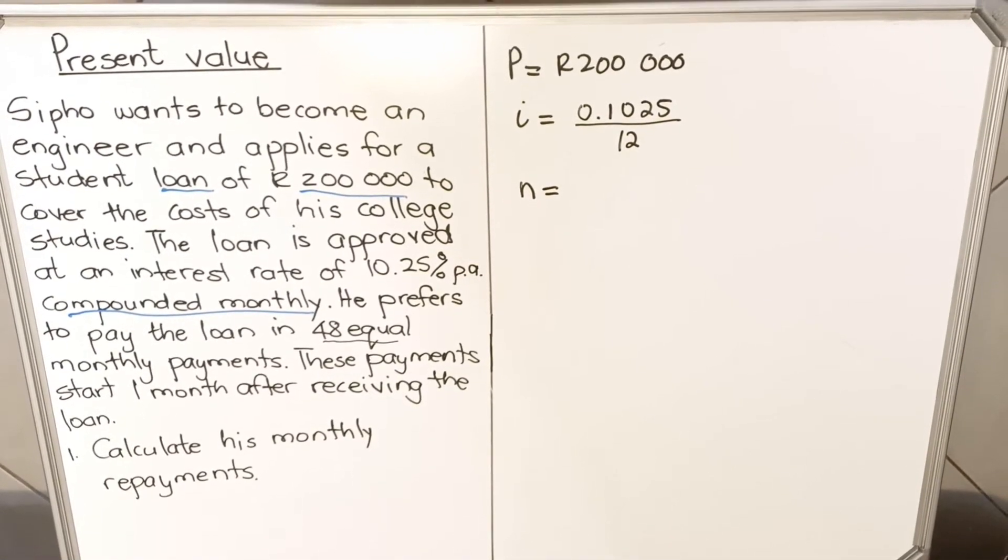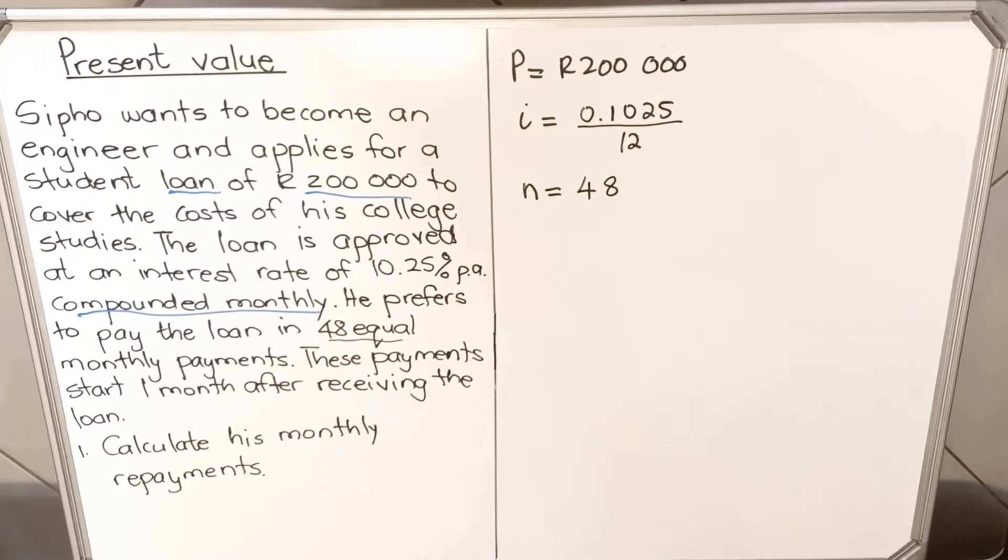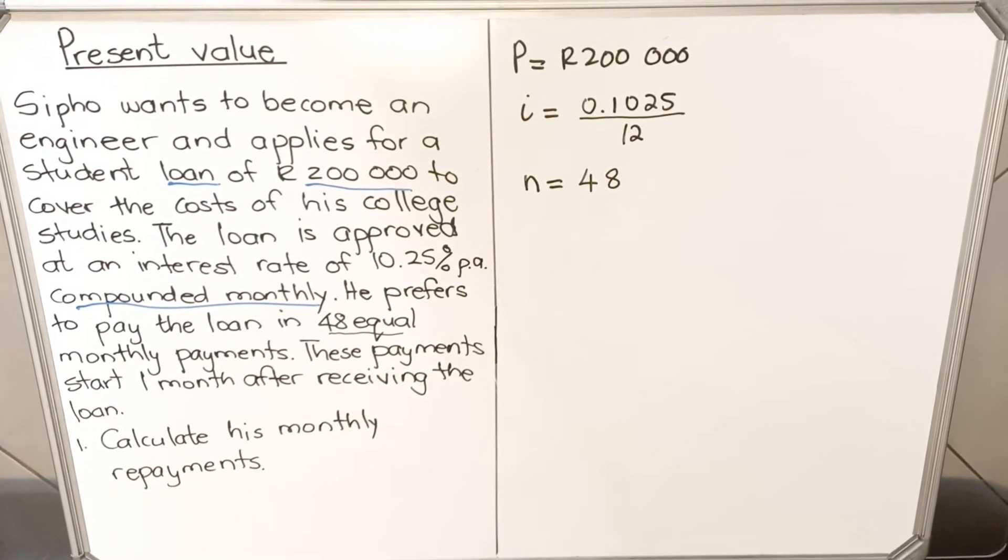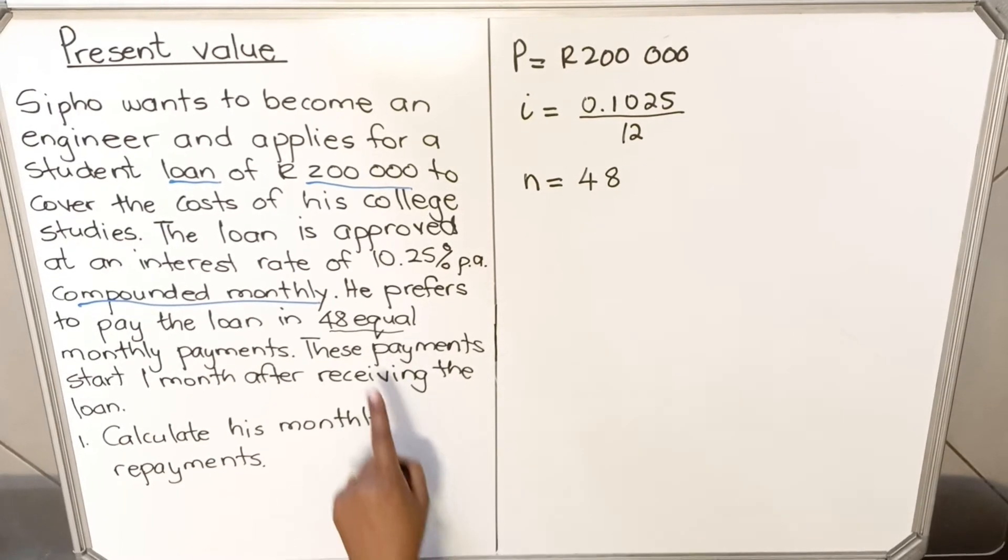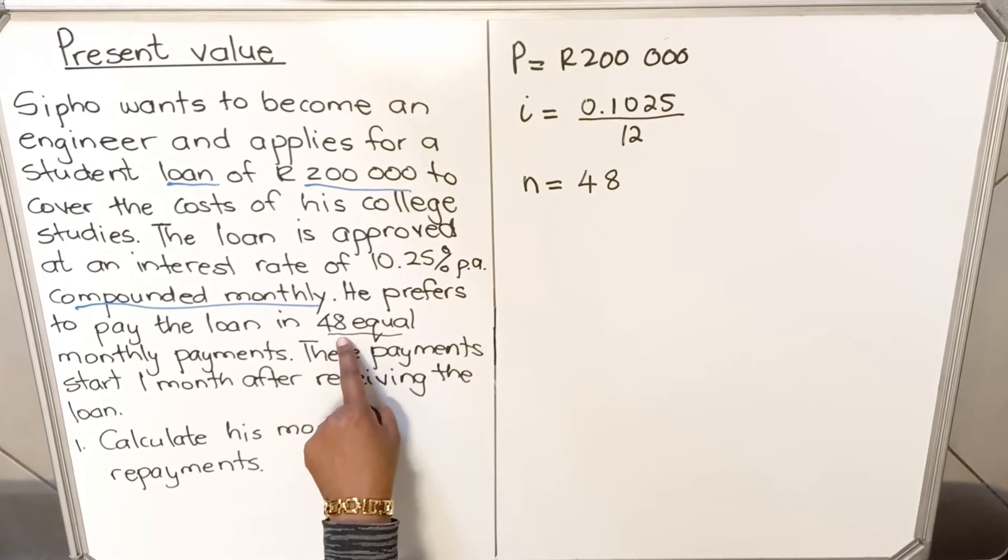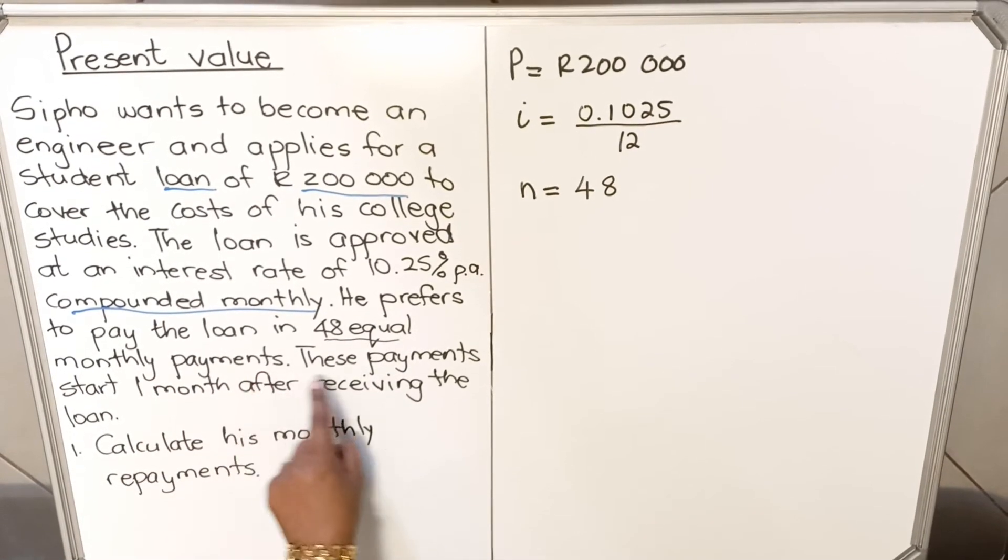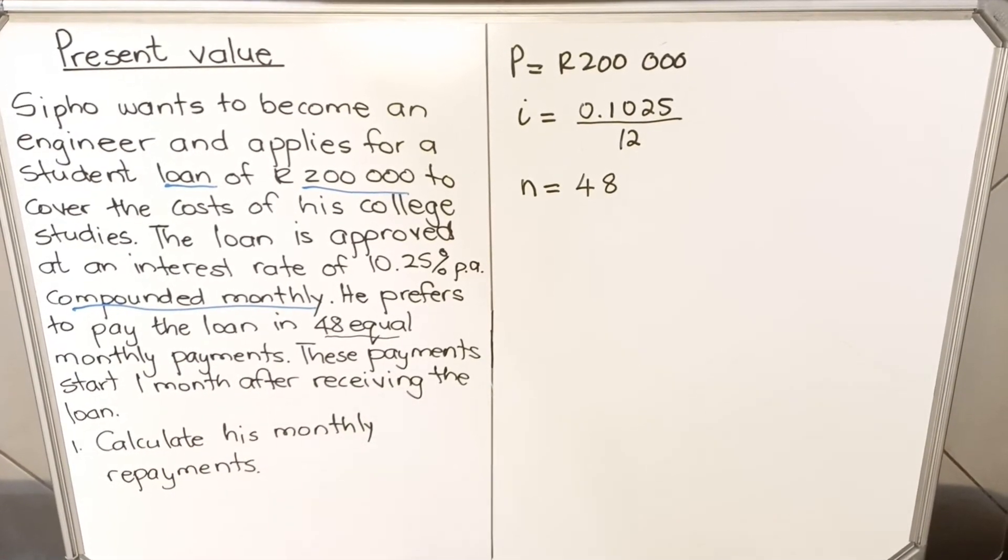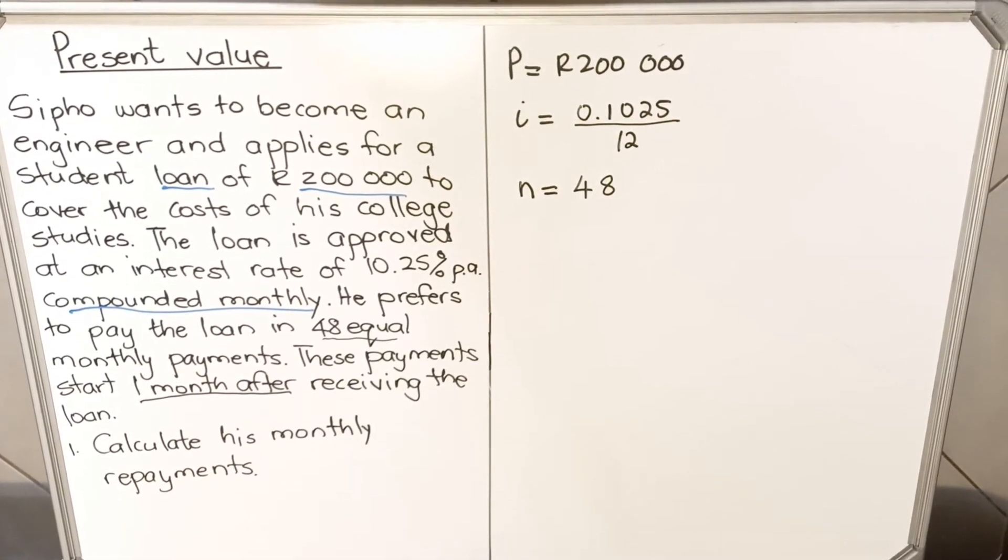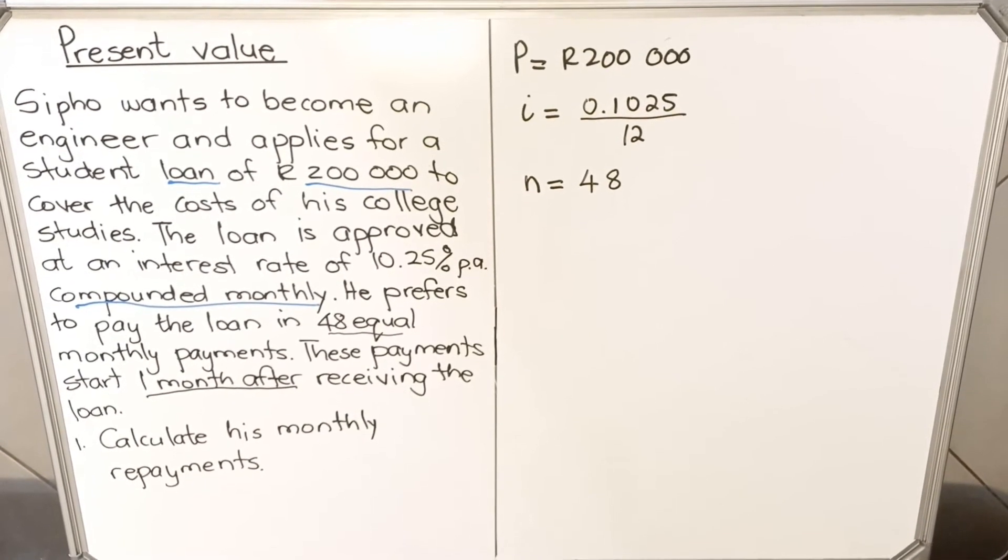With this grade 12 formula, the n is not the number of years, it is the number of payments. So they're saying he's going to pay 48 equal payments. They did not give you years. If the question had given you years, let's say 5 years, you'd say 5 times 12. But here, they're already telling you he's going to pay 48 times, so you don't multiply that 48 with a 12. They're telling you 48 monthly payments. These payments start one month after. This is also important, the one month after. When you take a loan, you pay one month after, that's when the interest starts.